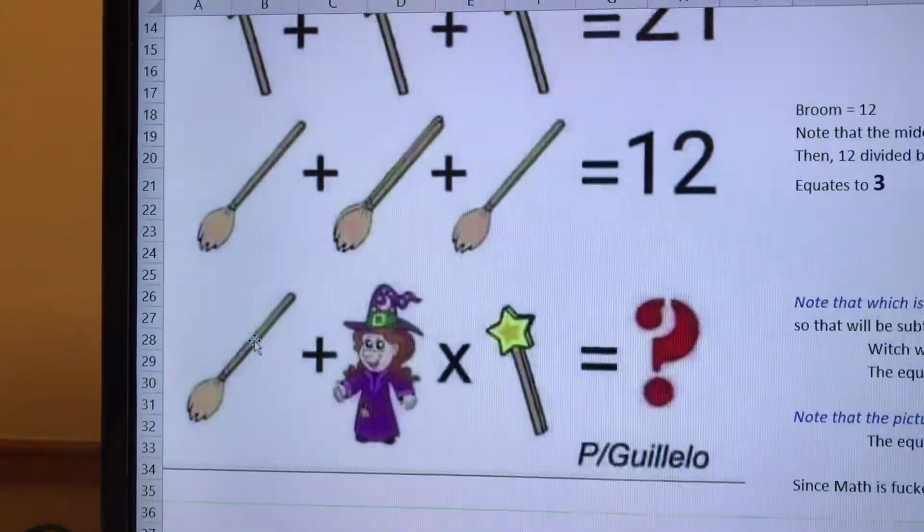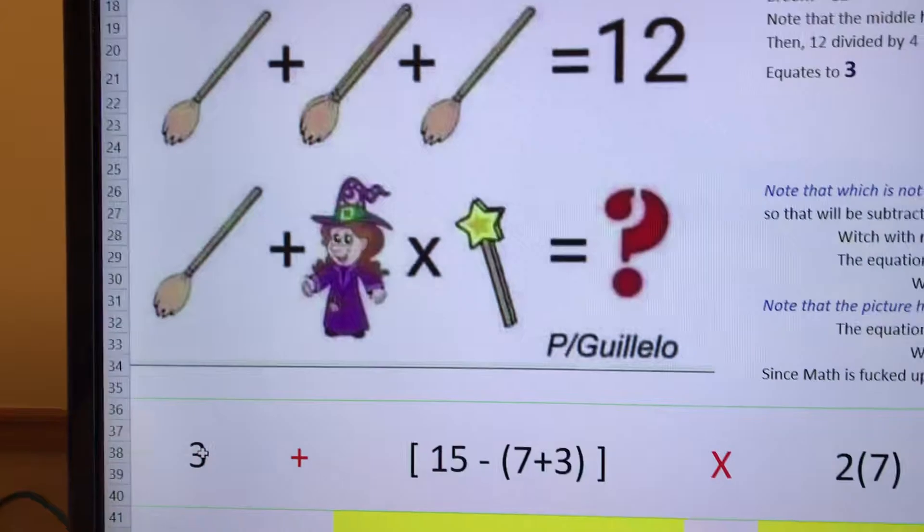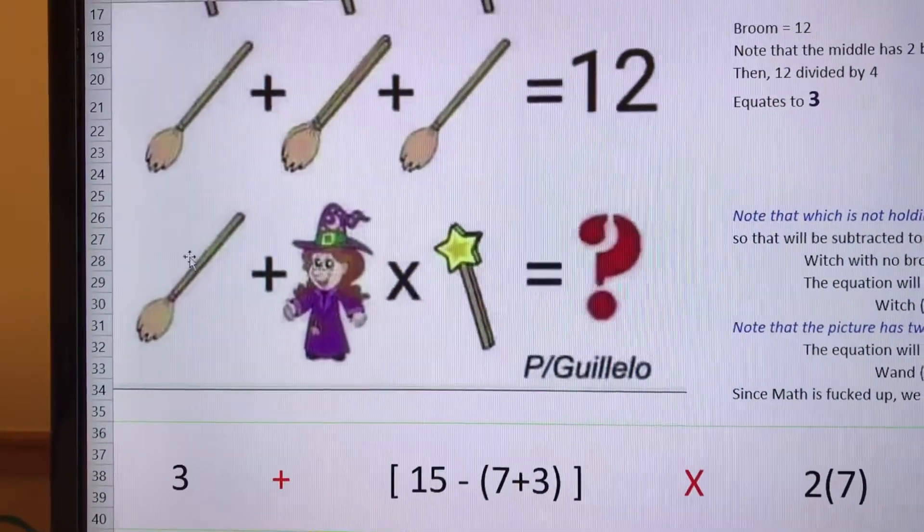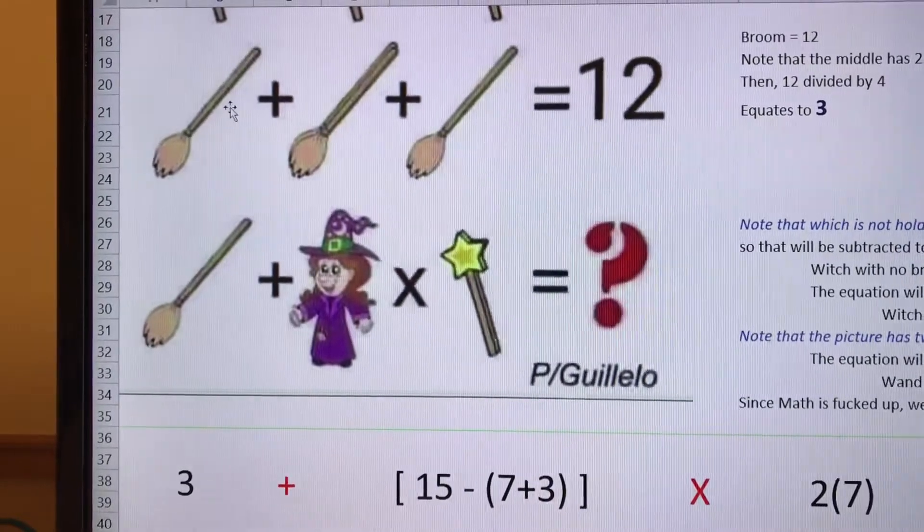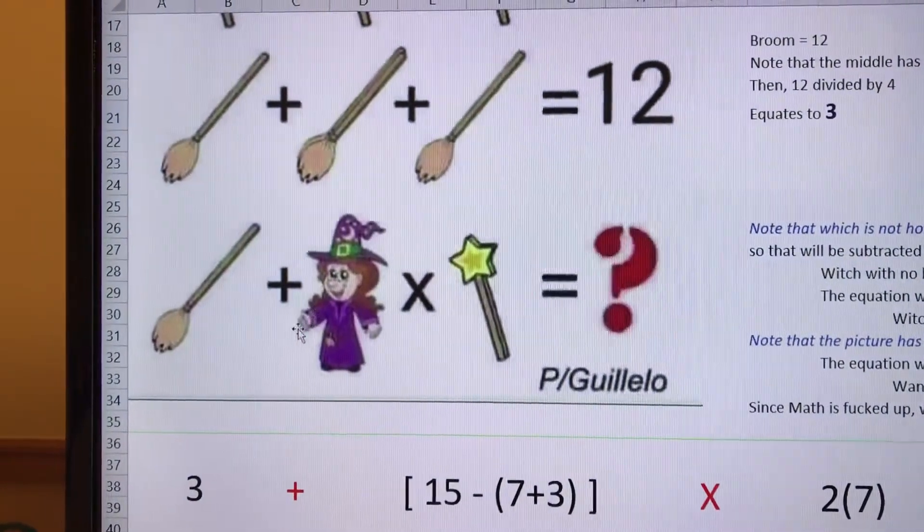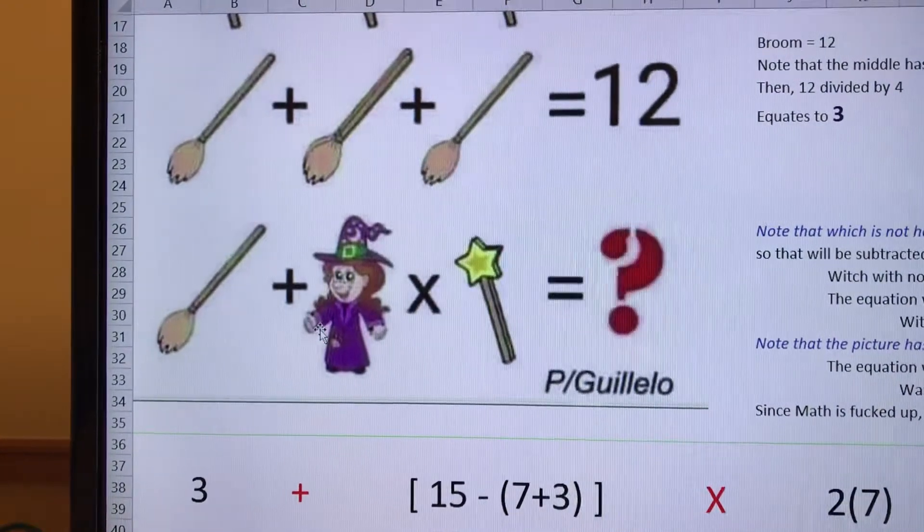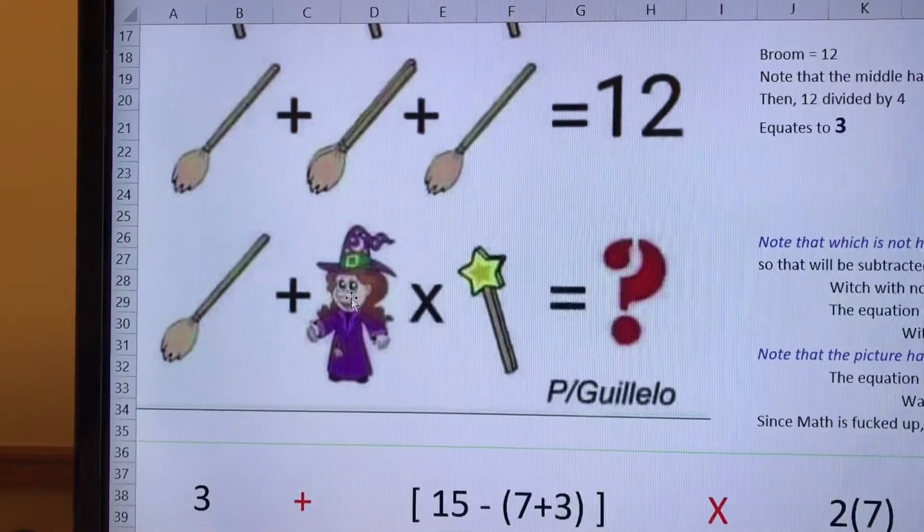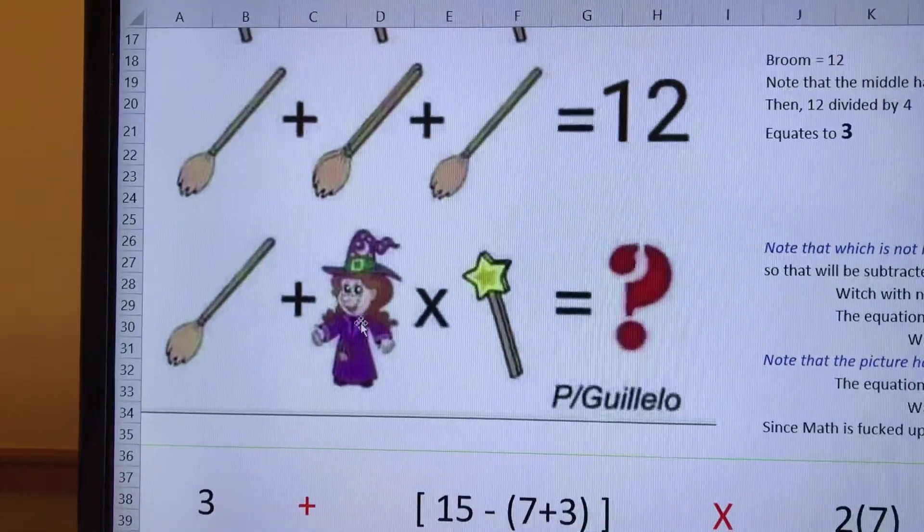In this right here, this is three, so I put it in my equation at the bottom as three. That's given because there's nothing duplicate, there's nothing different. The witch is kind of tricky - if you see, she's not holding a wand or a broomstick in her hand.